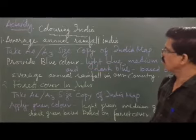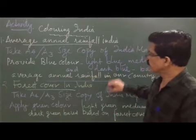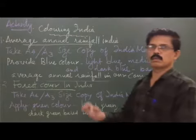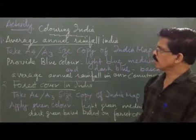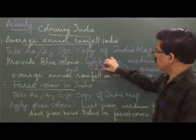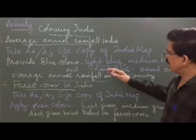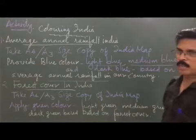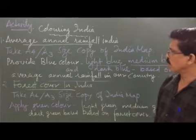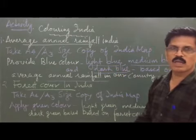Now you have to collect data on the average annual rainfall in different parts of our country. On the map, you can give a light blue color to areas with low annual rainfall, a medium blue color to areas with average or medium rainfall, and a dark blue color to areas with more rainfall.